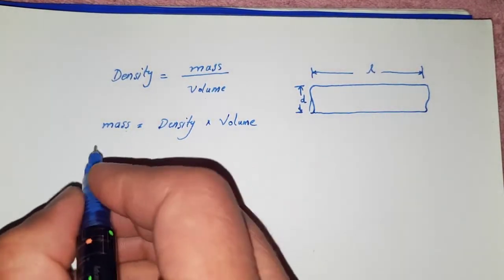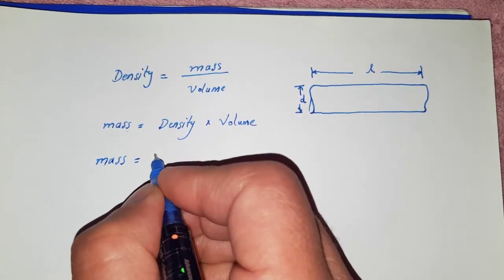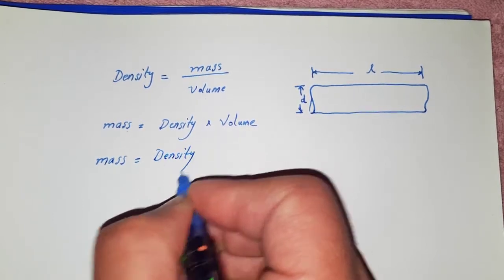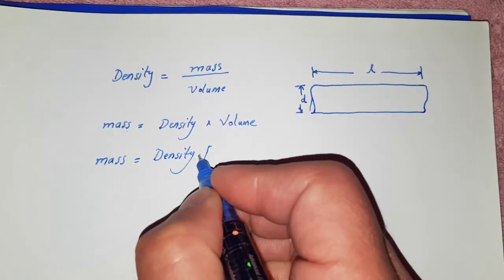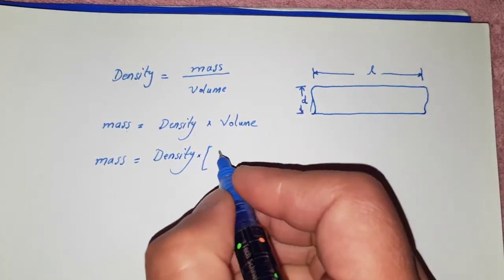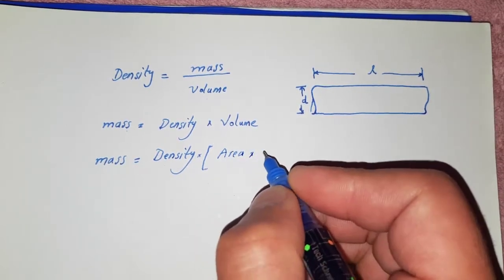Let's expand this formula. Mass is equal to density itself. Let's write volume of an element is equal to area of that element multiplied by length.